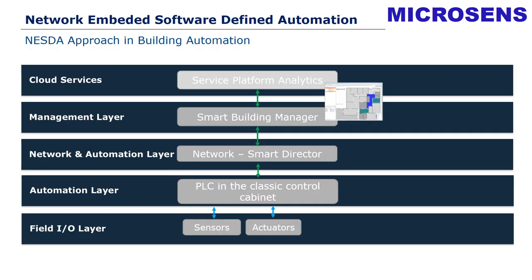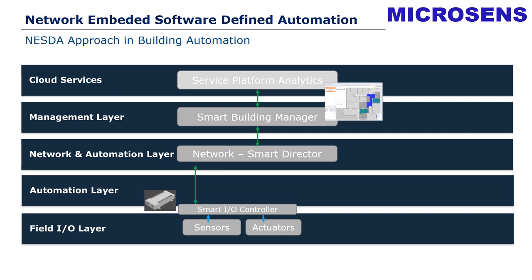Coming back to the layer model from before, the big question is what are the differences in the Microsense concept and where are they located? Returning to this layer model used for describing conventional building automation, we again have a field IO layer, automation layer, network layer, management layer, and cloud services. The first step we have taken is developing a device called the smart air controller, which enables us to use conventional devices and bring them directly into the network — from the field into the network. We have done the same for lighting by connecting lighting functionalities directly to the network.